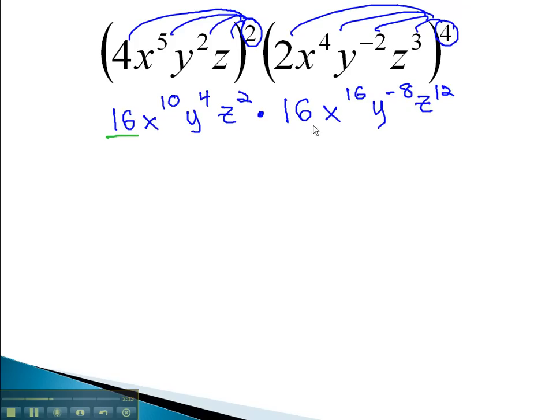As we continue simplifying, 16 times 16 will give us 256. On the variables, we will add the exponents. On x, 10 plus 16 is 26. On y, 4 plus negative 8 is negative 4. And on z, 2 plus 12 is 14.